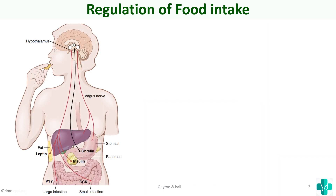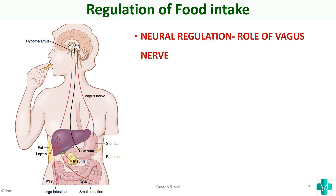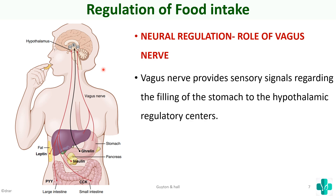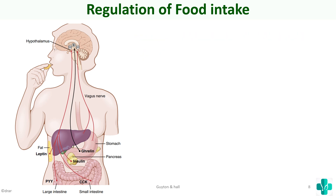Another important neural factor involved in regulation of food intake is the vagus nerve. When food reaches the stomach, there is filling of the stomach, and the vagus nerve provides sensory signals regarding this filling to the hypothalamic regulatory centers. The main function of the vagus nerve is to give information about the filling of the stomach to the hypothalamus.